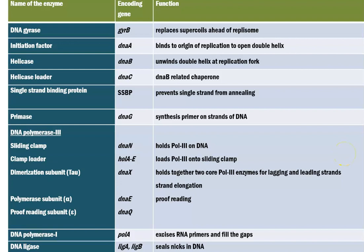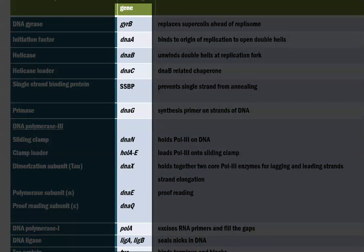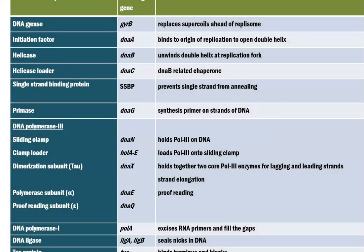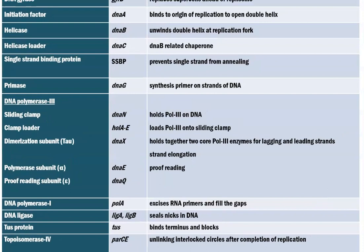Before going into the enzymes and their functions in detail, we will look at a list of enzymes, the genes encoding each particular enzyme, and their overall function. This includes DNA gyrase, initiation factor, helicase, and helicase loader. For example, DNA gyrase is encoded by gyrase B. In the last column I have provided the function of each enzyme — read through and get acquainted with the various enzymes and what role they play during replication.